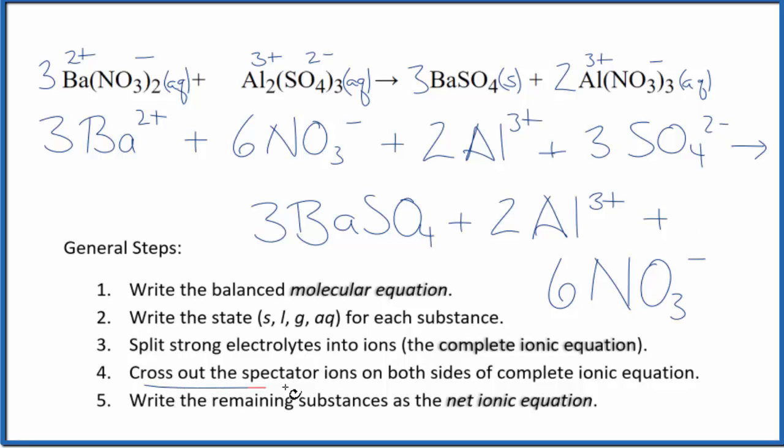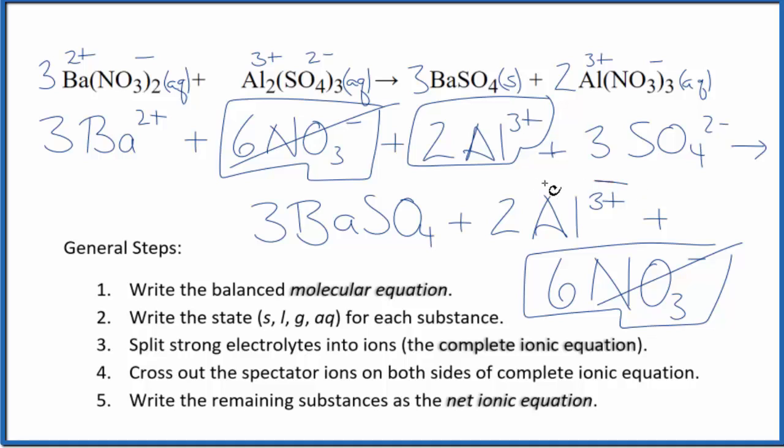Now we can cross out spectator ions. They're on both sides of the complete ionic equation. In the reactants, I can see six nitrate ions right here in the reactants and in the products. So I'm going to cross those out. They're spectator ions. I have two aluminum ions here and again in the products. Those are spectator ions as well.